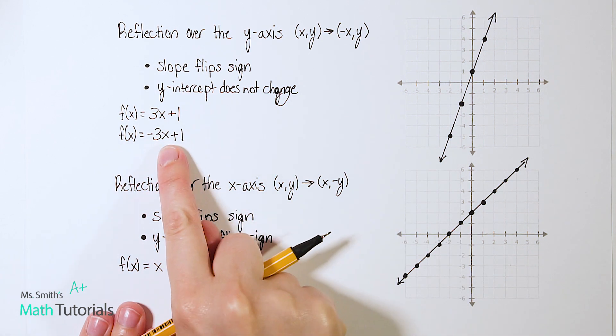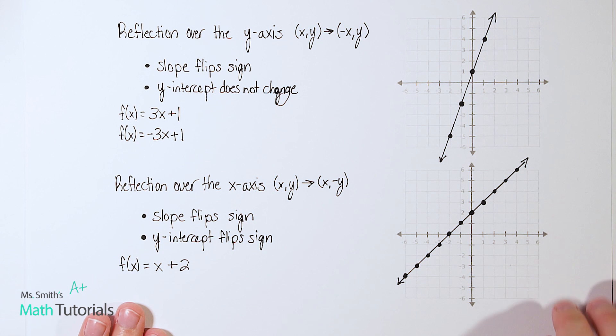So let's think about how that would look in this equation. My slope is going to flip signs. So the new one is going to be negative 3x and then the y-intercept does not change. It was plus one before. It's going to stay plus one. So let's go ahead and graph this line just to make sure it does look like it's reflected over the y-axis and I'm going to use a different color.